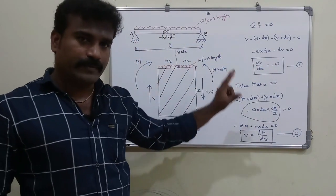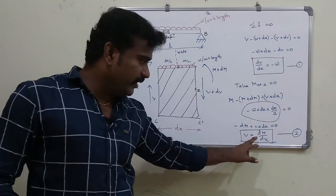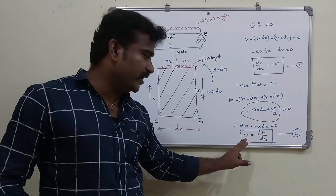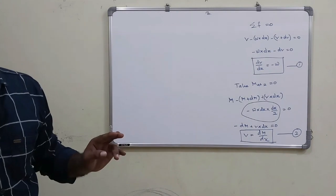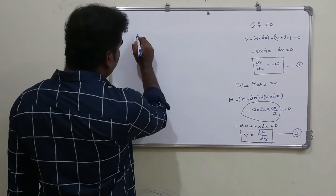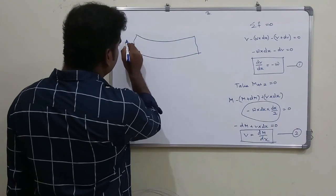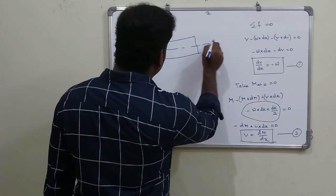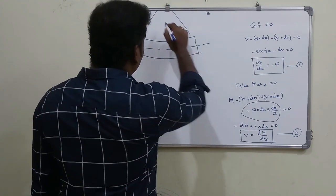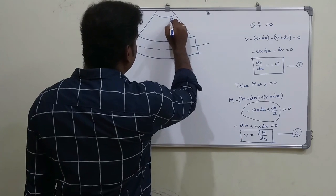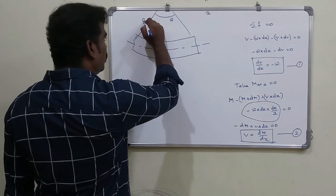So we have two relationships: shear force differentiated once gives the load, and V equals dM/dx. Now looking at the bending of a beam — this angle is theta and this is radius R, the radius of curvature.